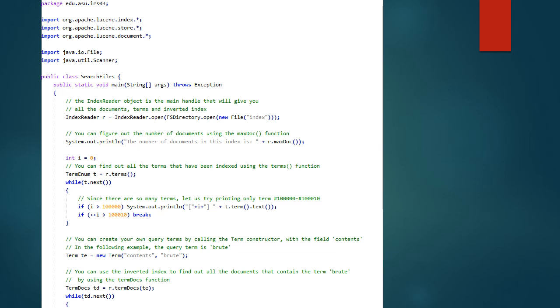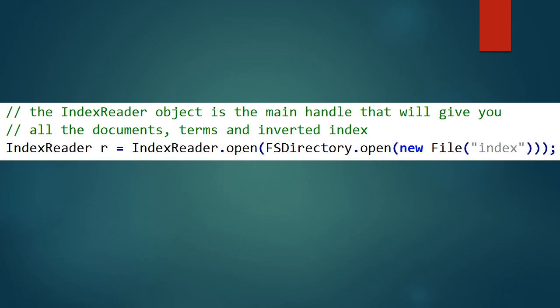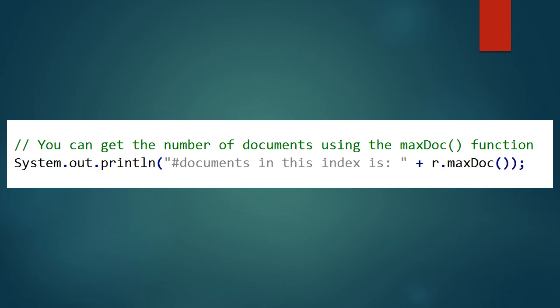If you look into this source, you will find that it has some very useful functions in it. To start with, we have the indexReader.open function that opens the index in the folder called index. This index has information about all the documents, all the terms in the documents and the inverted index. Note that we have stored the indexReader in the variable r. So what can we do with this indexReader? To start with, we can find out how many documents are indexed in the store by calling the maxDoc function. If you ran this code, you would find that it has 25,054 documents.